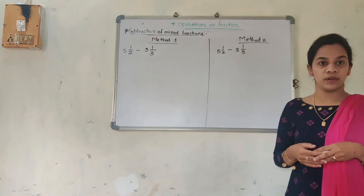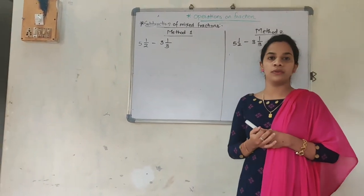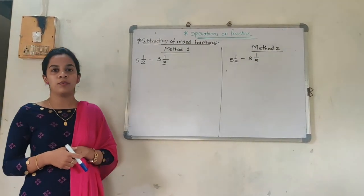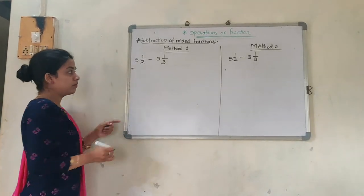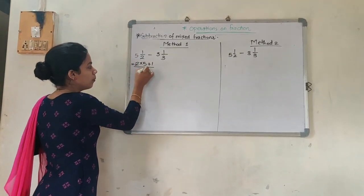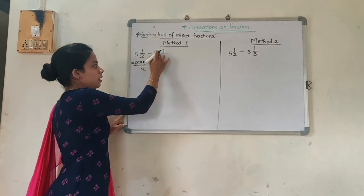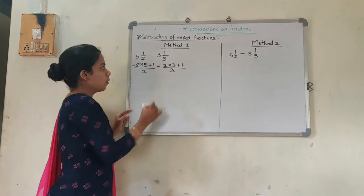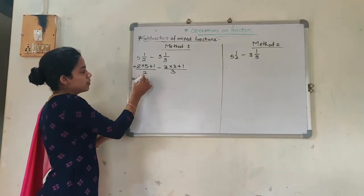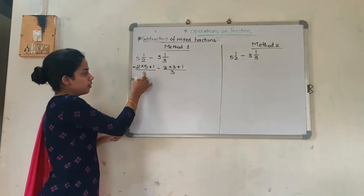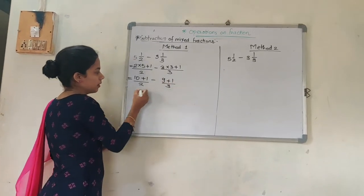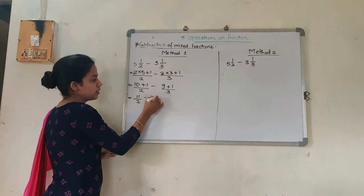Now we are going to do the subtraction of mixed fractions — same way, Method 1 and Method 2. See on the board: 5 and 1/2 minus 3 and 1/3. How are we going to subtract it? First, using the regular method: 2 into 5 plus 1, upon 2, minus 3 into 3 plus 1, upon 3. The minus sign comes from the original question. So 2 into 5 is 10 plus 1 upon 2, minus 3 into 3 is 9 plus 1 upon 3. This gives 11/2 minus 10/3.